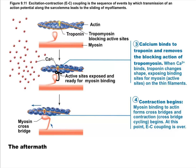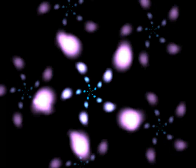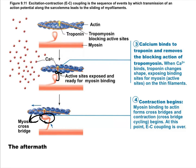And then we get the binding event: the myosin head binds actin, latches on, and pulls actin in one direction — that's where the force of muscle contraction is generated.